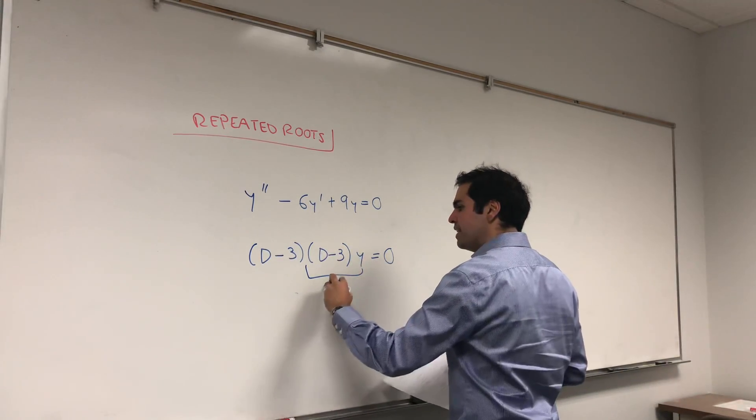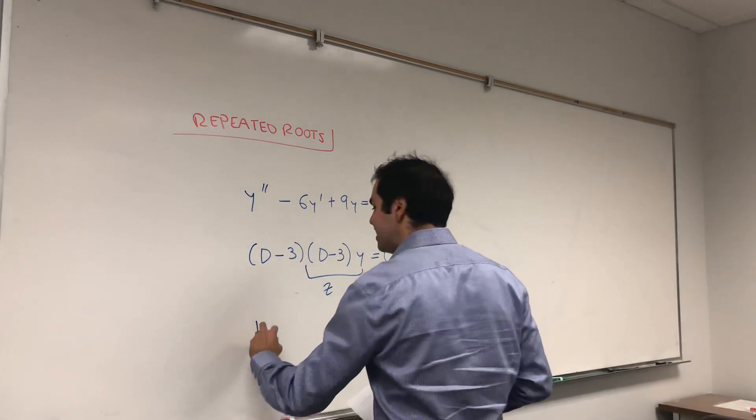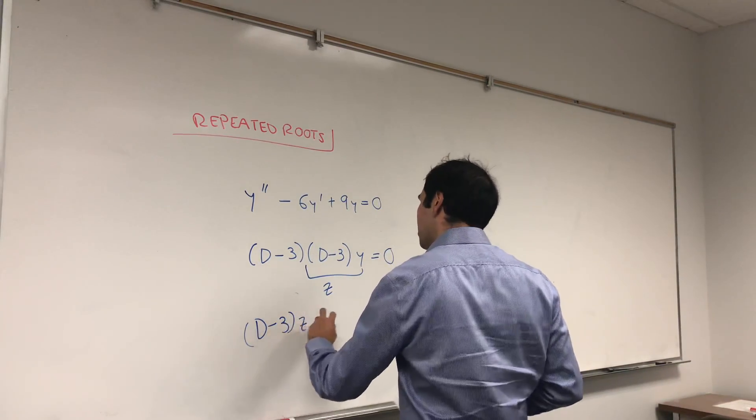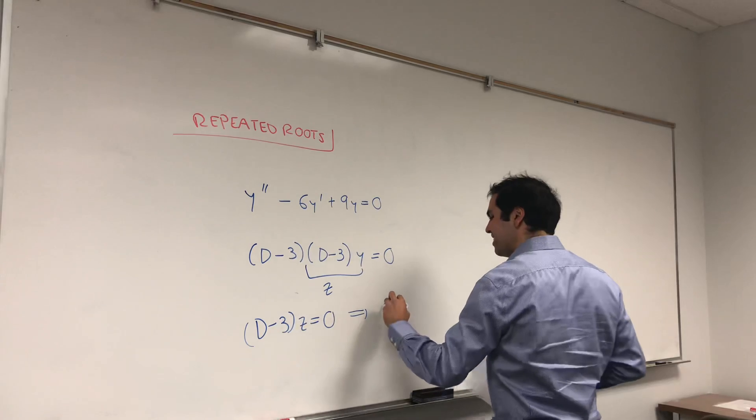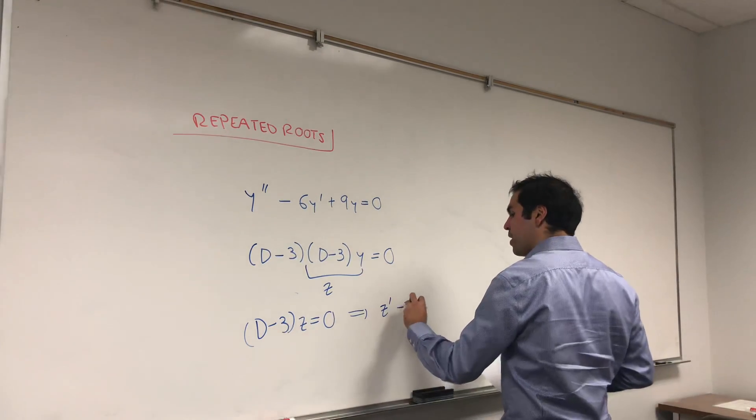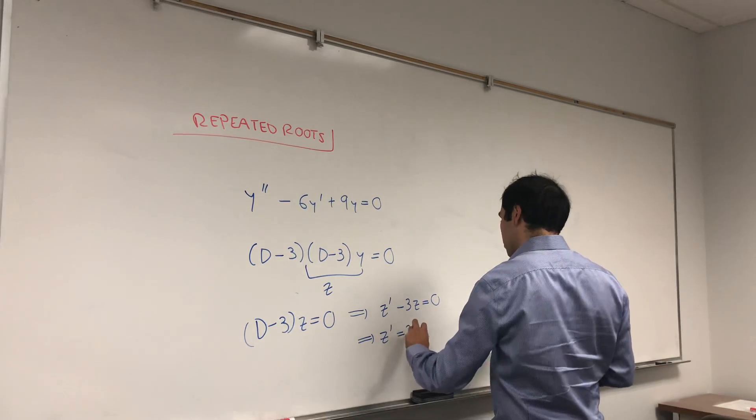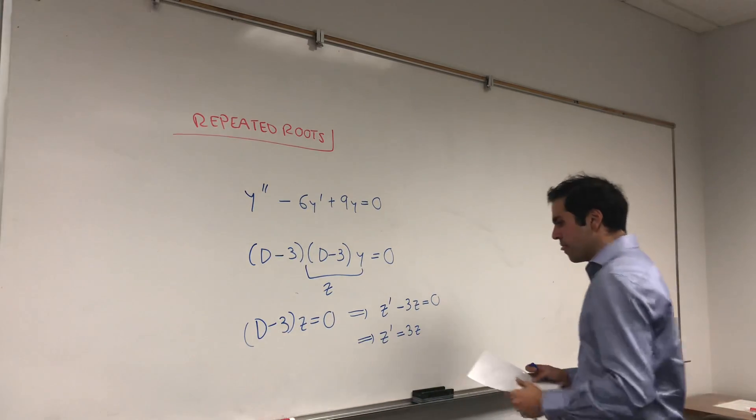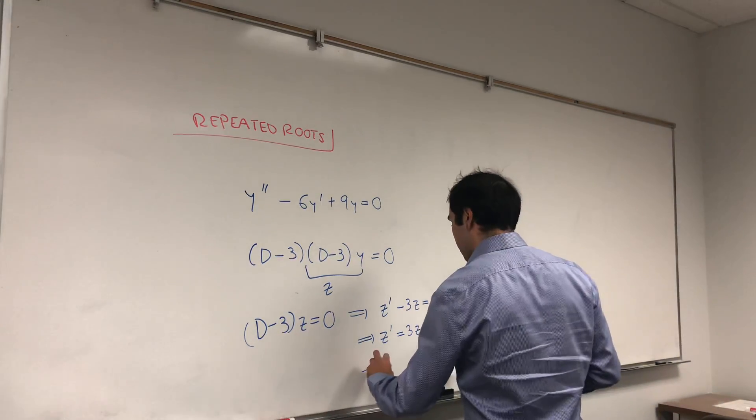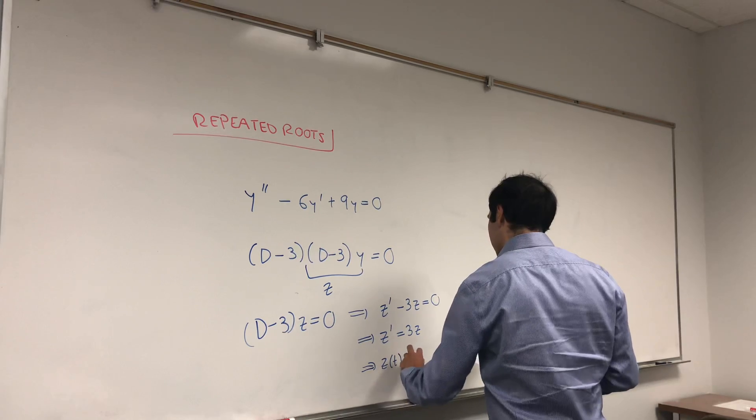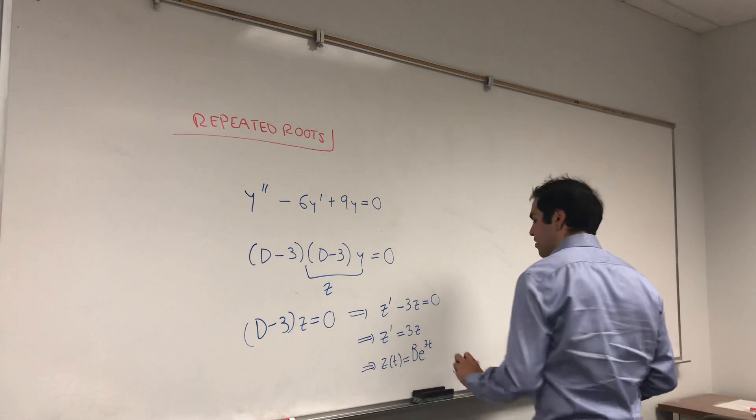Let z be d minus 3y, and we'll get back to that. Then we get d minus 3z equals zero. But this is just z prime minus 3z equals zero. So, z prime equals 3z. But we know the solution to that. That's just ae to the 3t. So, z of t equals, let's say, be to the 3t. And you'll see why.